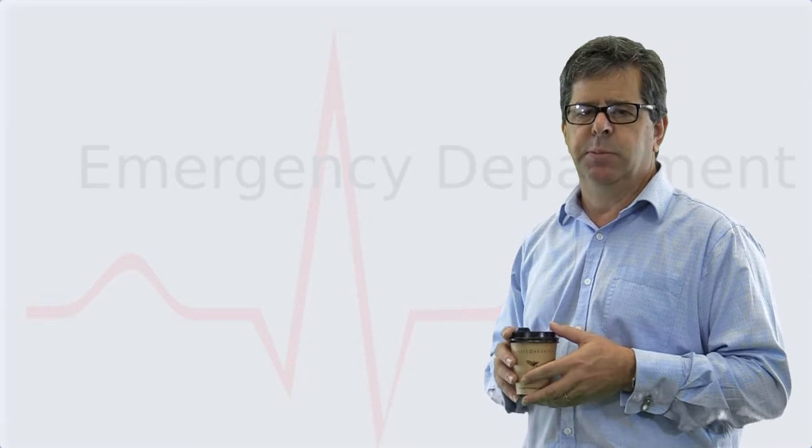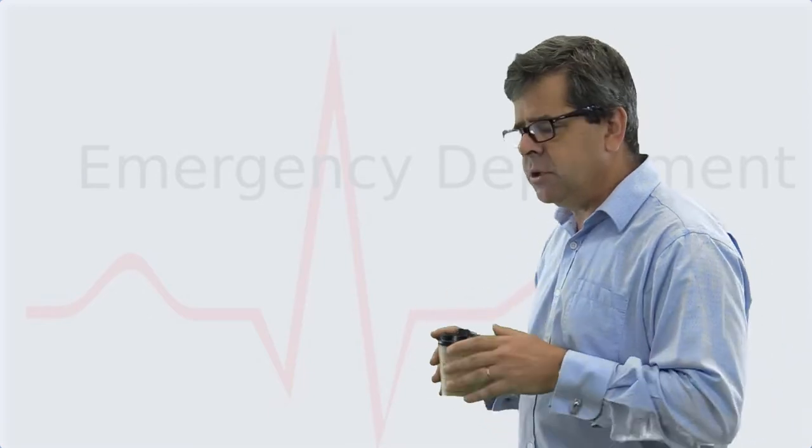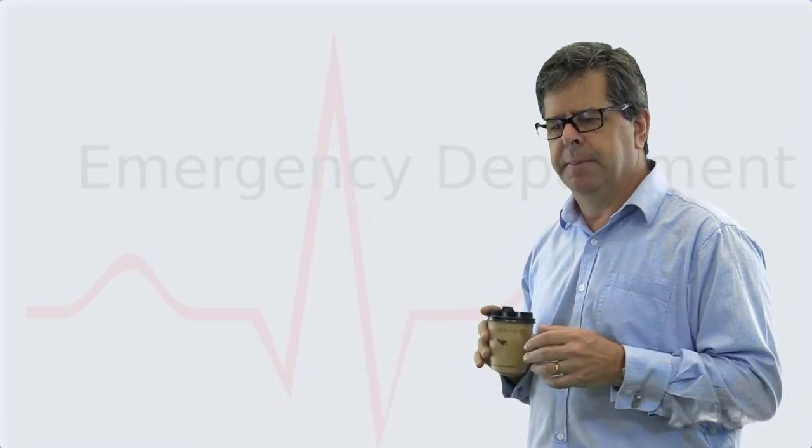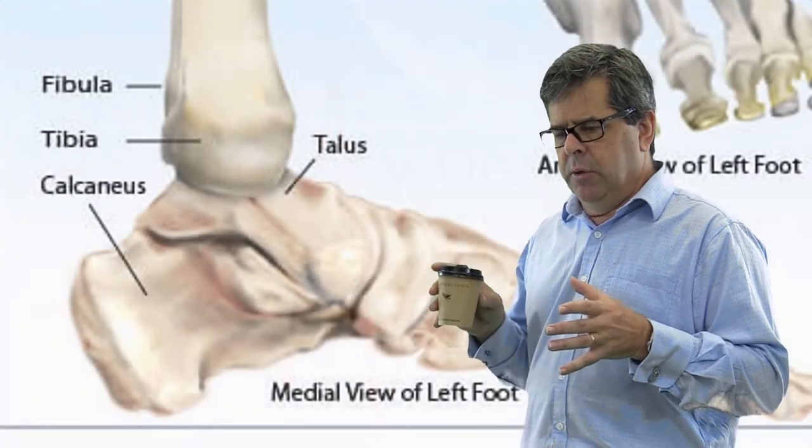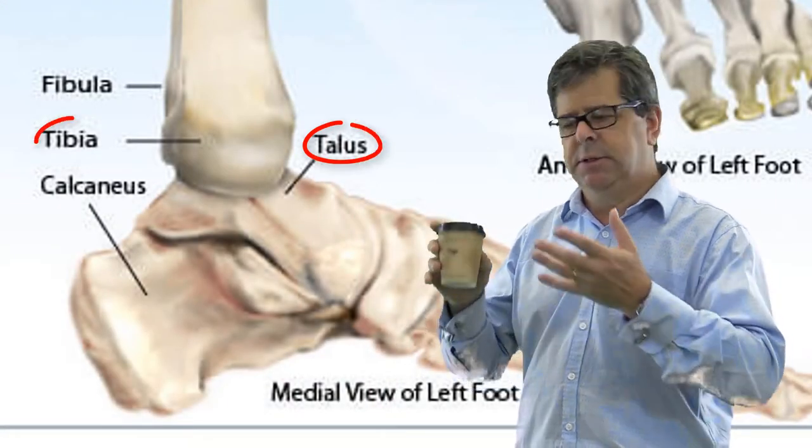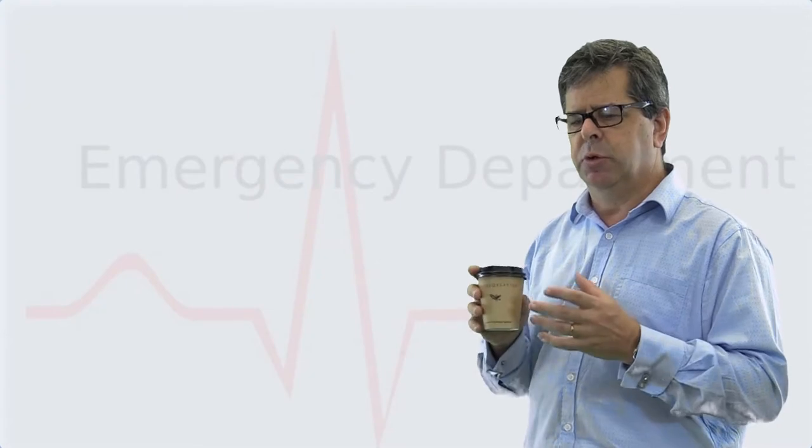So first of all, a little bit of anatomy. The ankle joint is made up of the talus, the tibia, and the fibula, forming the talotibial joint.